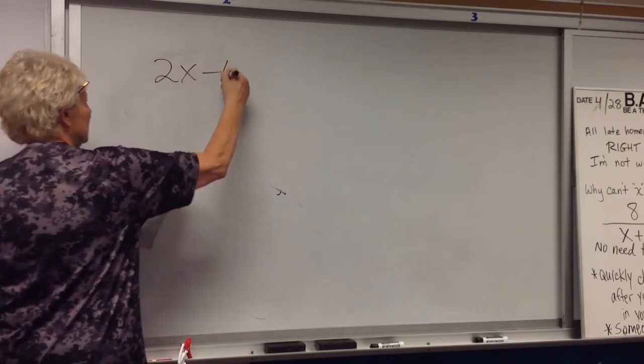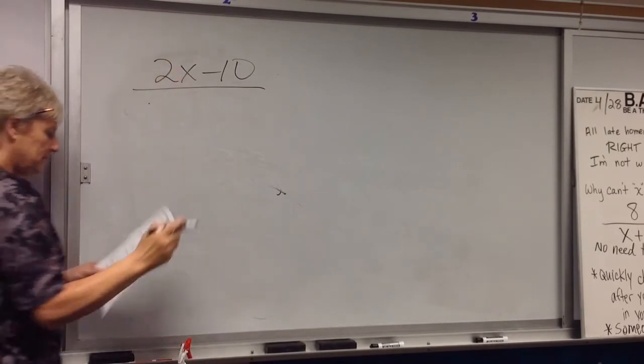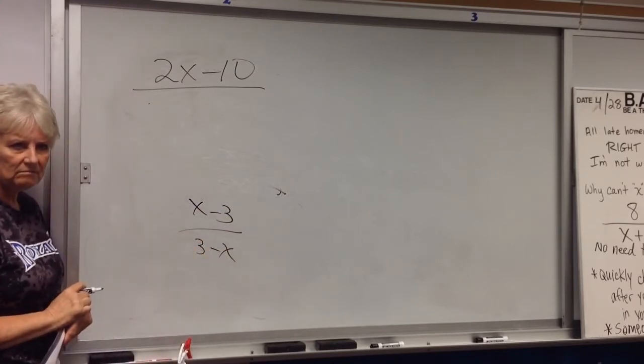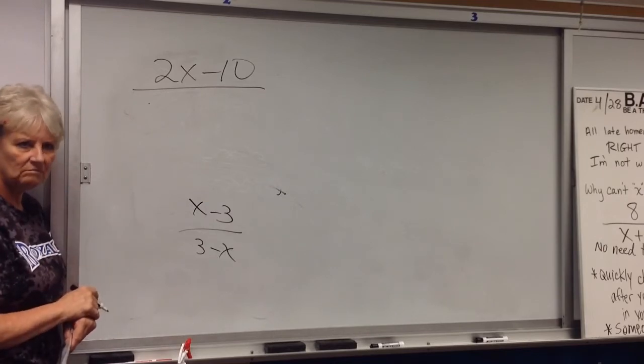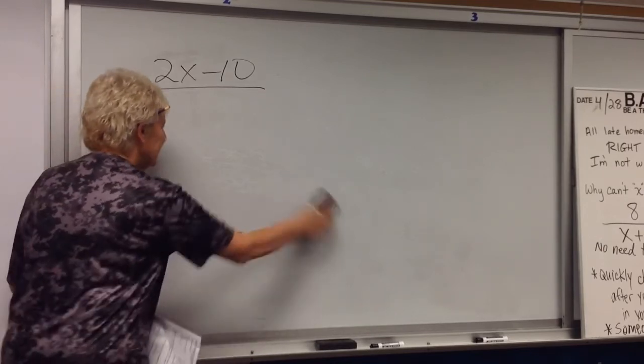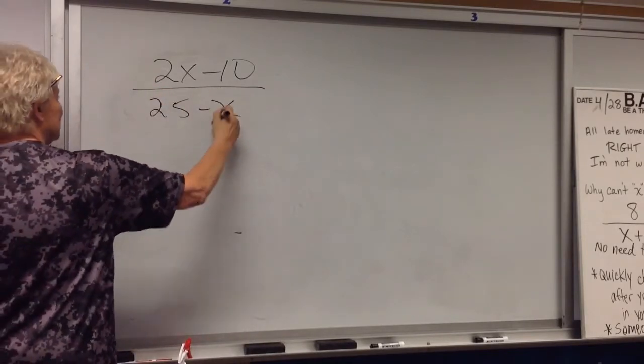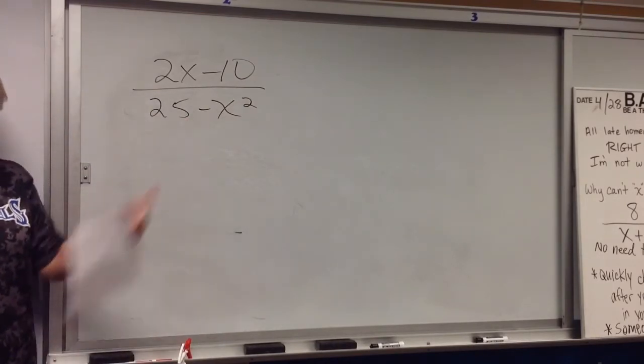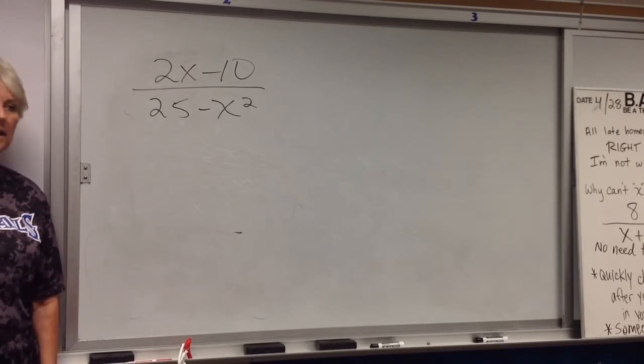What was the excluded value? 3. You don't want to forget that. 2x minus 10, 25 minus x squared. This one's complicated because that's not in standard form. You might want to make it in standard form first. Try to simplify it. They can both be factored after you write them in standard form.